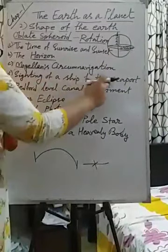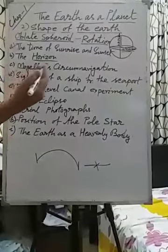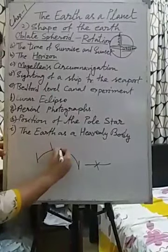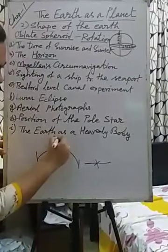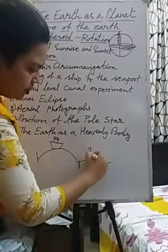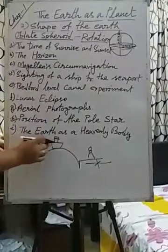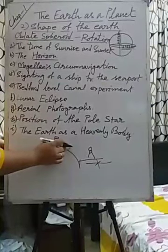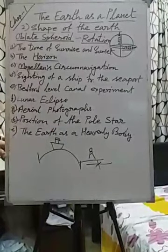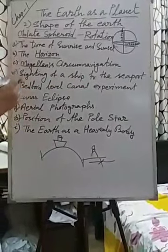Sighting a ship from the seaport is another clear experiment. If we observe a ship approaching toward the seaport, we can first see only the top part of the ship. When the ship comes close to the seaport, we can see the whole body of the ship — because of the shape of the Earth. The Bedford canal experiment I will explain last, after completing all the others.